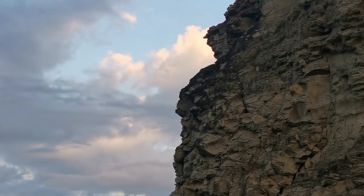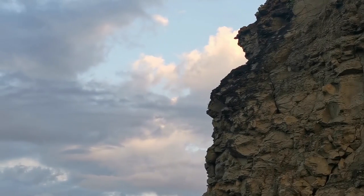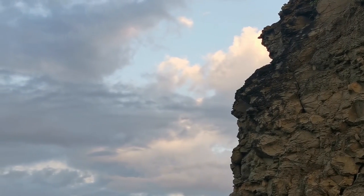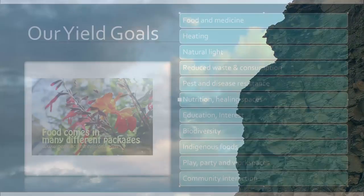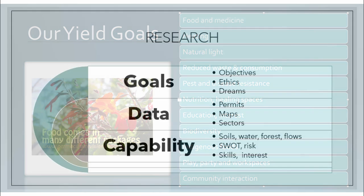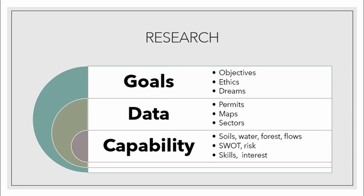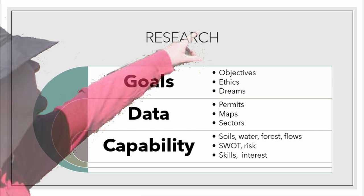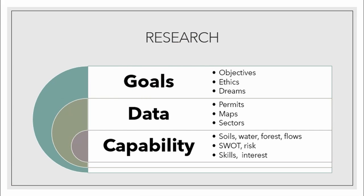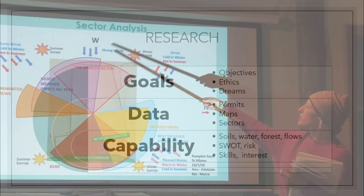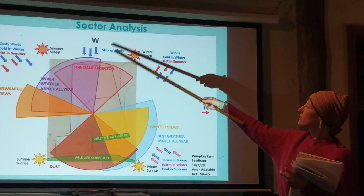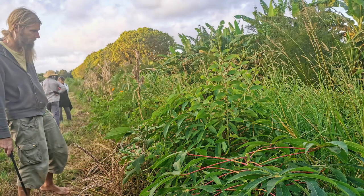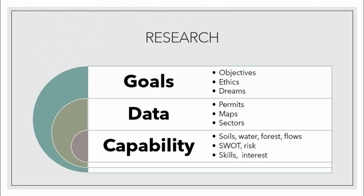One of the biggest sections of your design process will be the research. In the research, we collect the goals of the clients and ourselves, and the ethics. Then we look at the data — all the different types of maps, the permissions you need to apply for, and the sectors of natural energies that are reaching the site. We also look at the capability of the site and the people that are going to be involved in changing it.